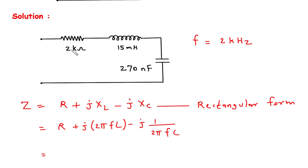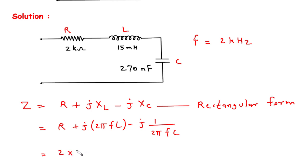The value of R is 2 kilo ohm, which is 2×10³. This is the value of L and this is the value of C. So Z equals 2×10³ plus j2πF.